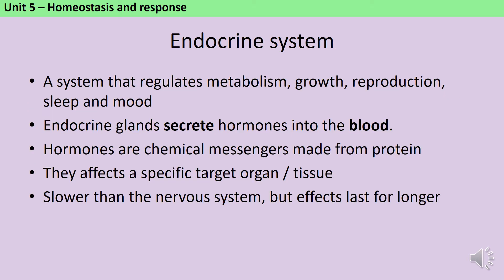The endocrine system regulates many important but relatively slow functions, such as metabolism, growth, reproduction, sleep and mood. Endocrine glands are an example of an effector, and they secrete — which means make and release — various different hormones into the bloodstream.